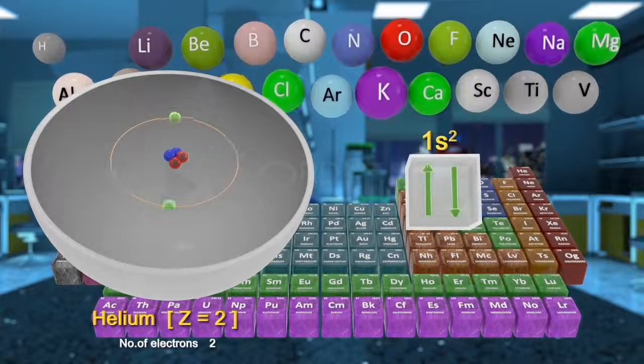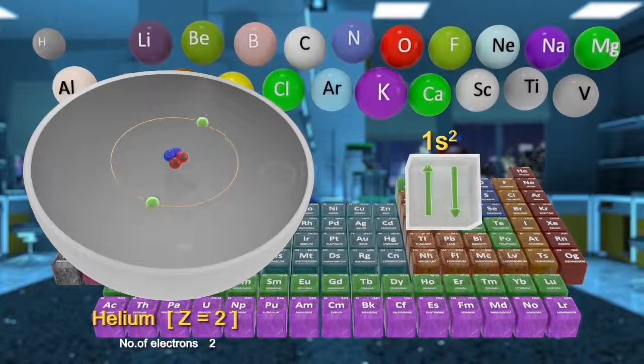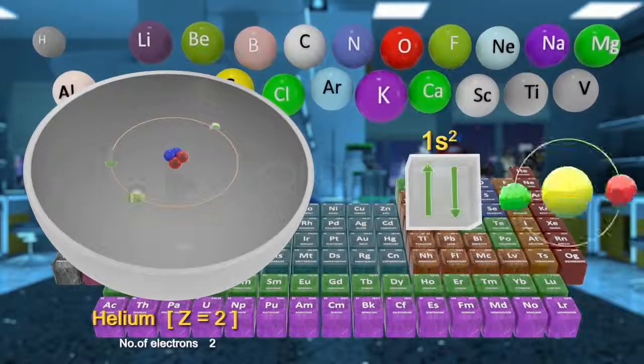However, according to Pauli's exclusion principle, these two electrons should have opposite spin.